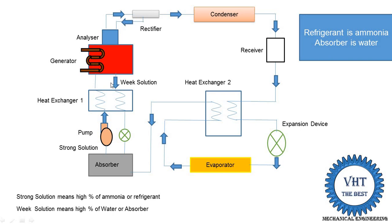We are adding one heat exchanger between the absorber and generator, and we are adding one heat exchanger between the condenser and evaporator. Now I will explain in detail the function of these two heat exchangers, the function of the generator, and the function of the rectifier.